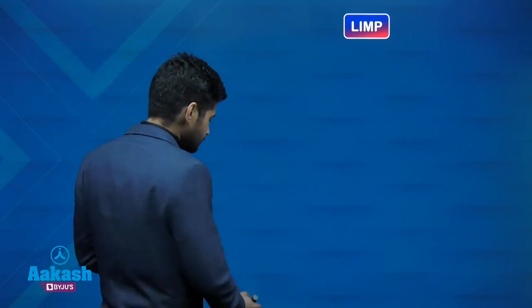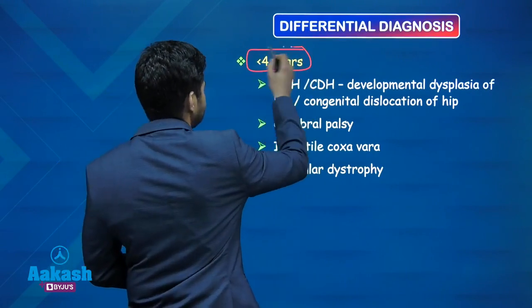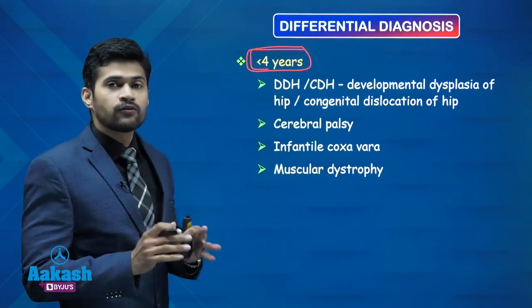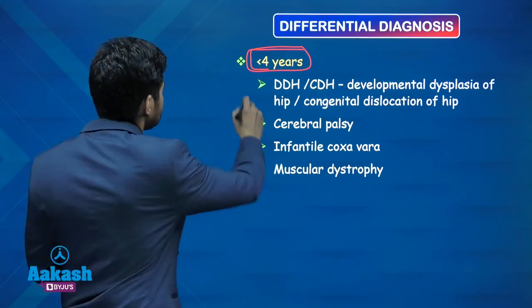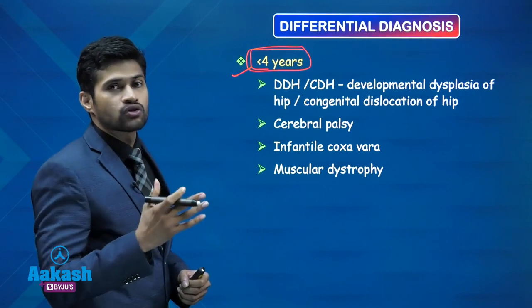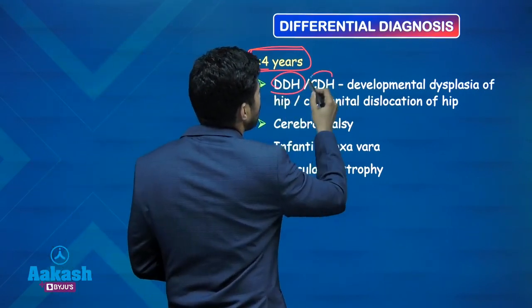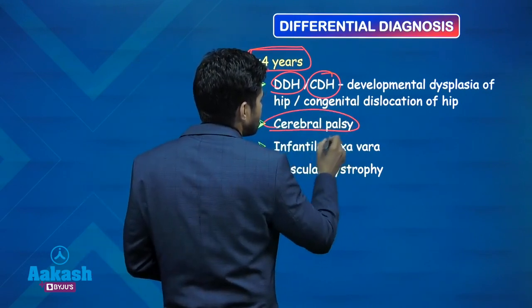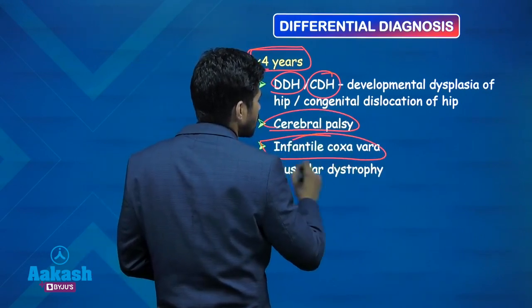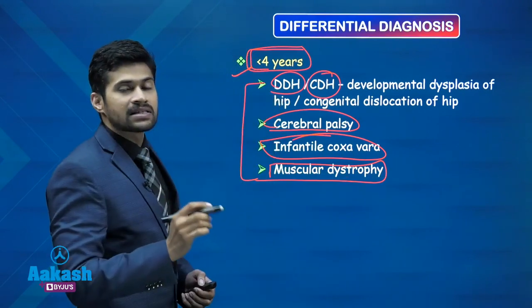First, about Limp — we know what a Limp is, but what can be the cause of Limp? You have to remember the causes of Limp in some age groups. For example, in less than 4 years, the cause of Limp can be developmental dysplasia of hip or congenital dislocation of hip, cerebral palsy, infantile coxa vera, or muscular dystrophy. These are the causes of Limp in less than 4 years.